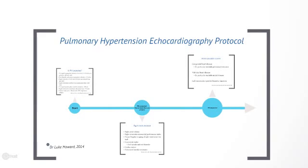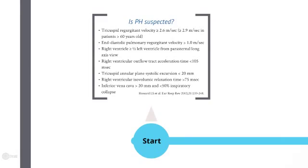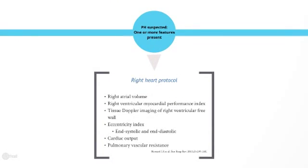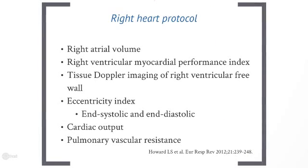I'm now going to take you through a brief outline of the pulmonary hypertension echocardiography protocol. We start with a suspected case of pulmonary hypertension. Here is a list of some of the echo measurements that can be made that might lead you to suspect pulmonary hypertension. Once pulmonary hypertension is suspected on the basis of one or more features from that list, then a more detailed right heart protocol is undertaken. Here is a list of some of the measurements that you would consider making as part of a right heart protocol.